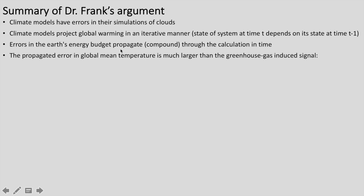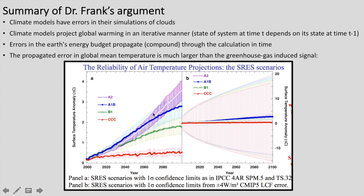The propagated error in global mean temperature is much larger than any greenhouse gas-induced signal, either over the past hundred years or into the future. Dr. Frank illustrates this with plots from his AGU poster, showing on the left the traditional way of displaying uncertainty using the spread of individual model runs as a confidence interval, and arguing that when you properly account for error and propagate it through, you get uncertainty ranges much, much larger than the actual forced temperature change signal.